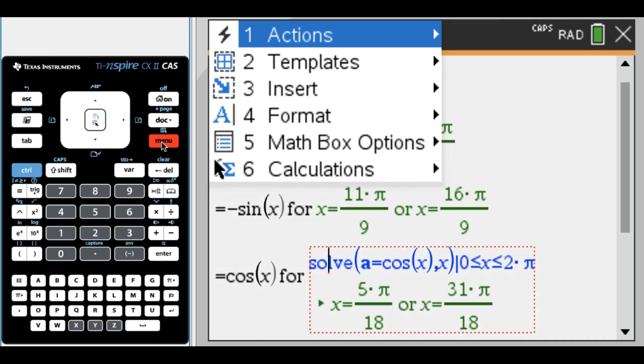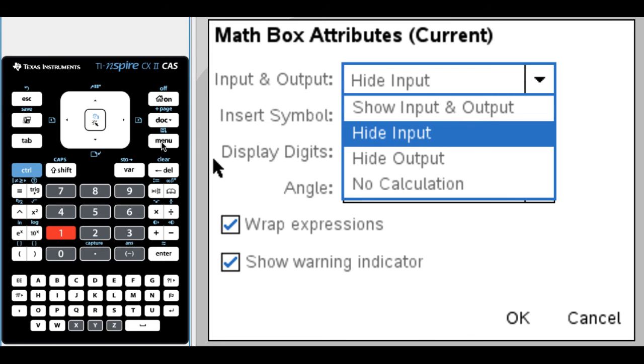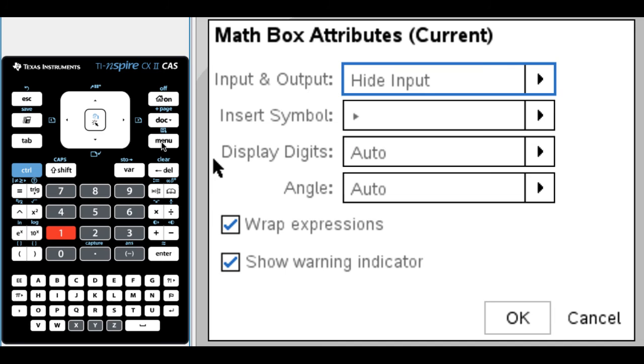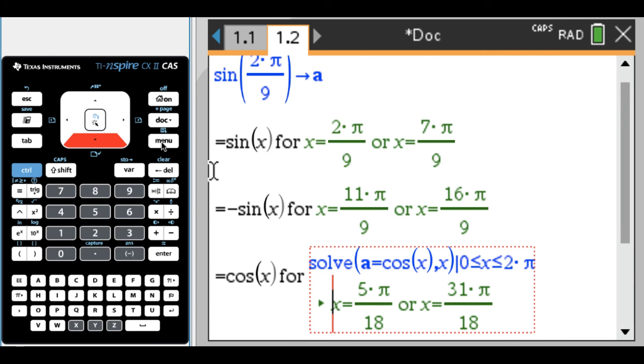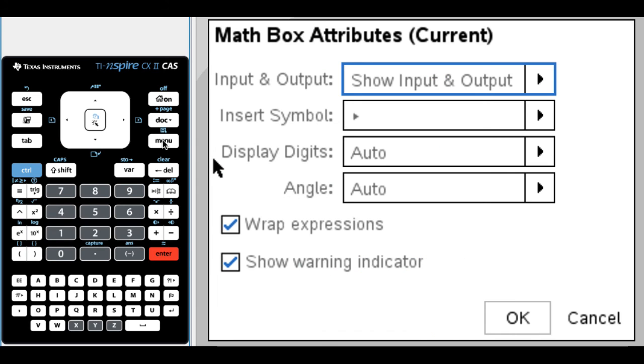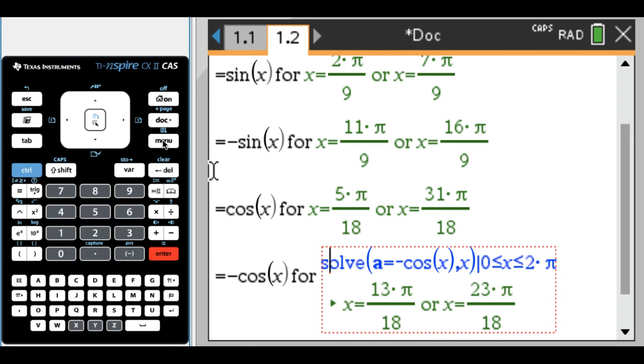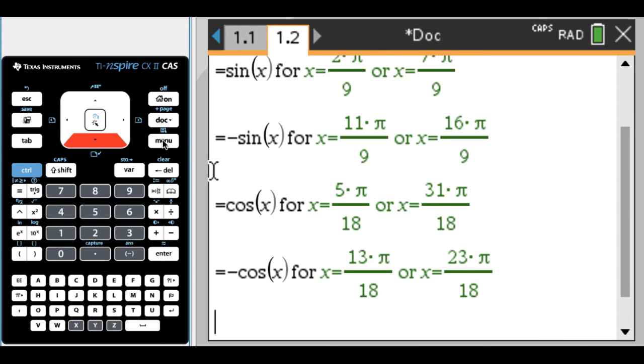And let's do it again. Menu, 5, enter. Just show me the output, so hide the input. I think that's what's confusing me. Get out of this box. And then again, menu, 5, enter. Hide the input. Okay. Press okay. There we go.